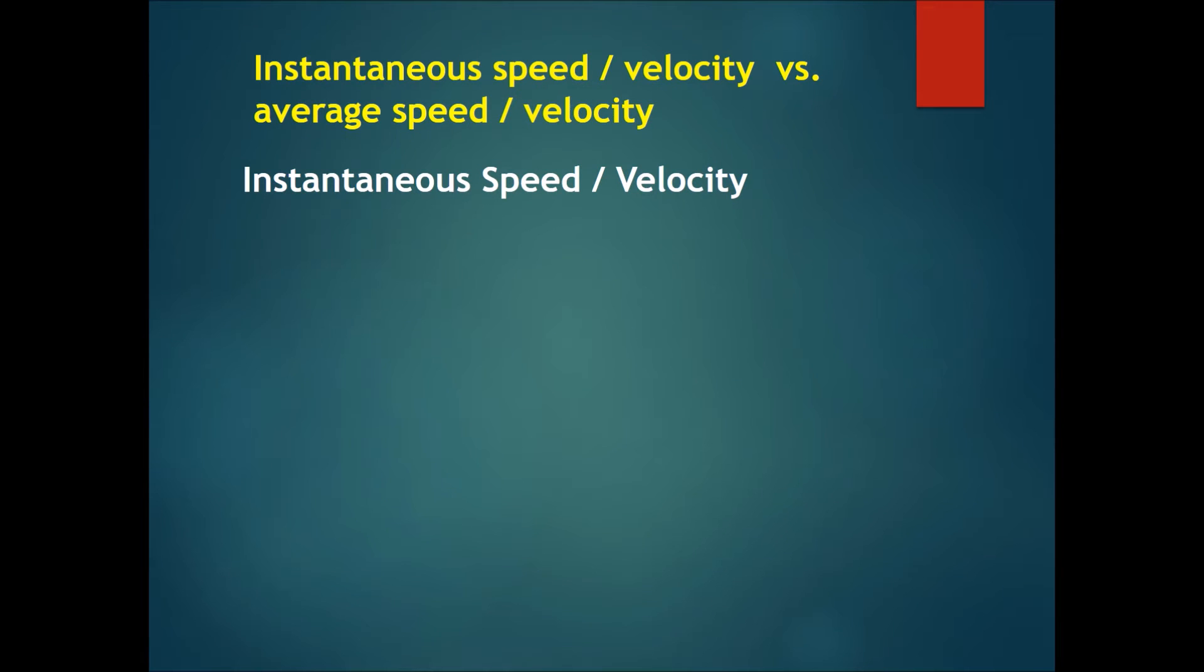Instantaneous speed or velocity versus average speed or velocity. The first one, instantaneous speed or velocity, is the speed at a particular instant in time.